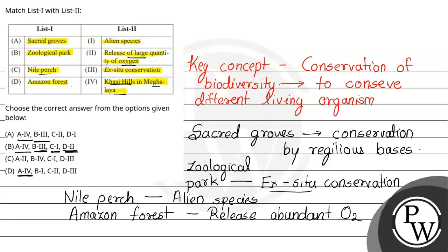So the final answer is Option B: Sacred Groves → Khasi Hills Meghalaya (A4), Zoological Park → Ex situ conservation (B3), Nile Perch → Alien species (C1), Amazon Forest → Release of large quantity of oxygen (D2). Answer: A4, B3, C1, D2.